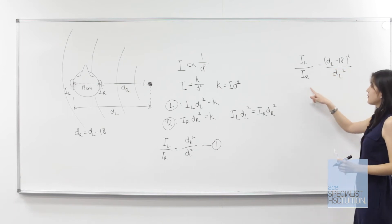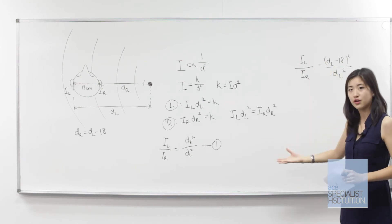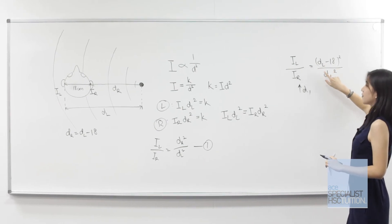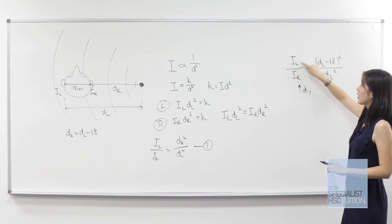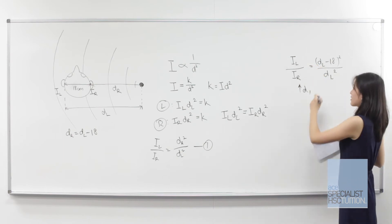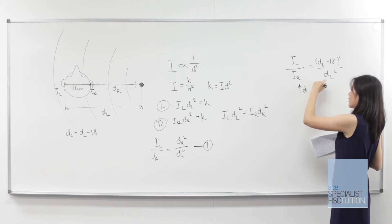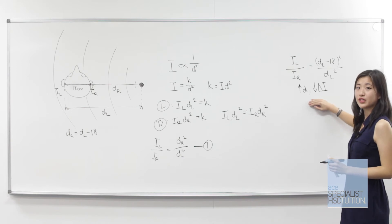From this equation, we can see that as the distance of the sound from the left ear increases, this ratio il over ir approaches one. In other words, the difference in their intensity decreases. This is a very important relationship to realize for this question.